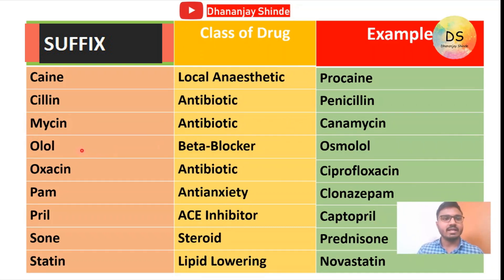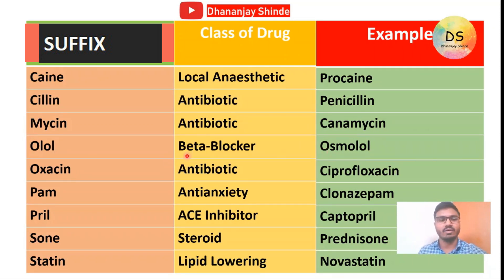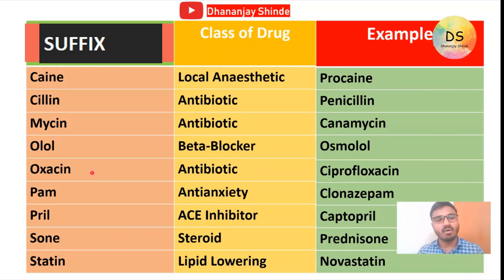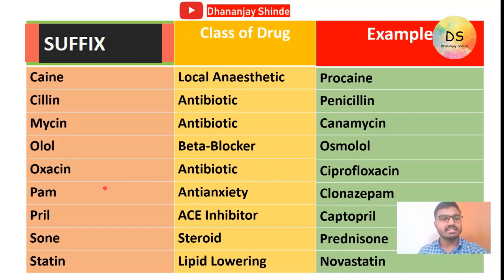Next is '-olol' — if the suffix of a drug is '-olol', then the class of drug will be beta blocker, and the example is esmolol. Then '-oxacin' — if the suffix of a drug is '-oxacin', then the class of drug will be antibiotic, and the example is ciprofloxacin.